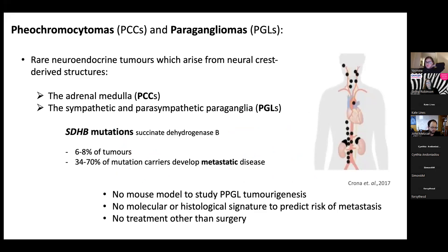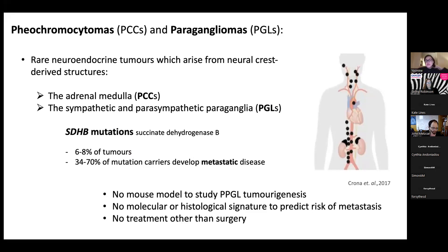PPGLs are rare neuroendocrine tumors arising from neural crest-derived structures - from the medulla for pheochromocytomas and the paraganglia for paragangliomas. Our group is interested in SDHB mutation-related tumors, as these account for the most aggressive form of PPGLs. SDHB mutations are present in 6-8% of tumors, and up to 70% of mutation carriers go on to develop metastases. We're really lacking models to study these cancers, and that's the challenge we're trying to overcome.